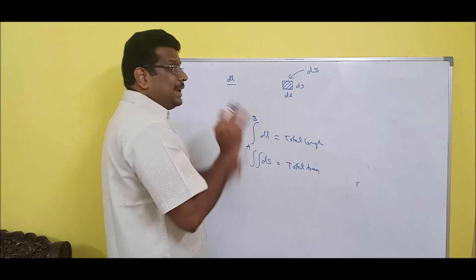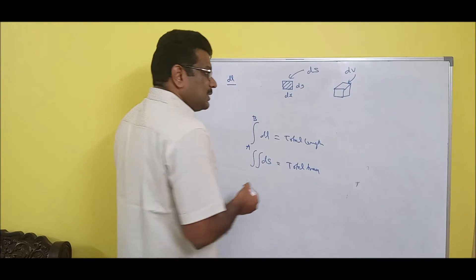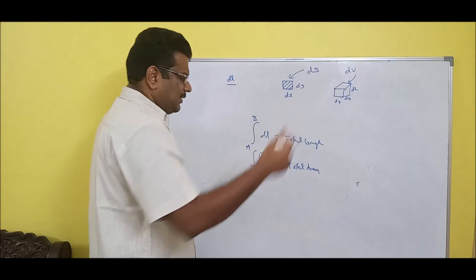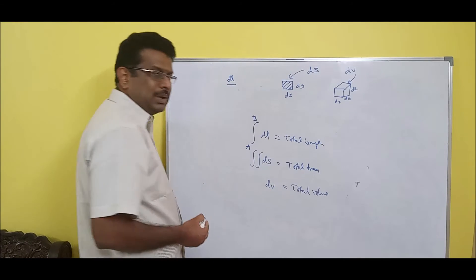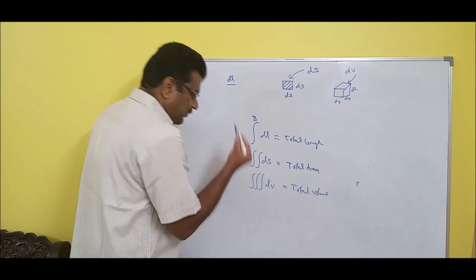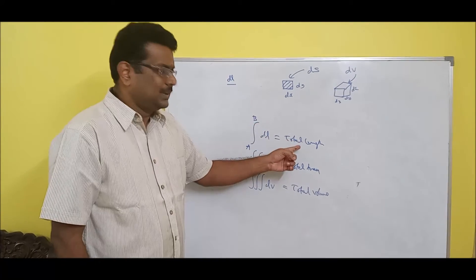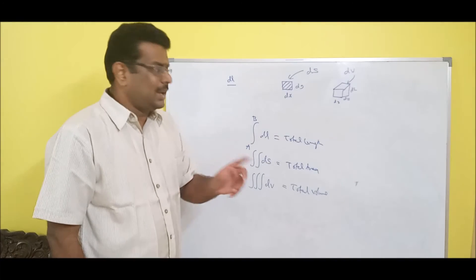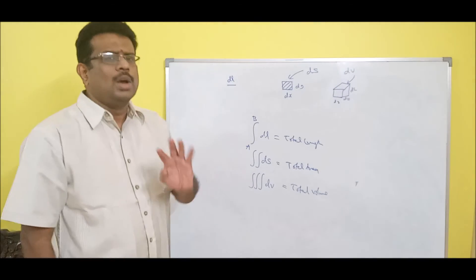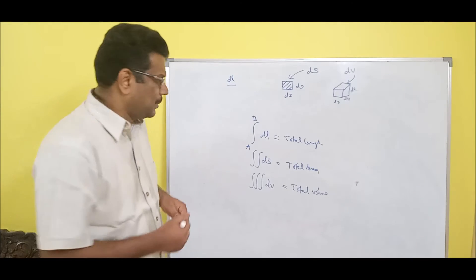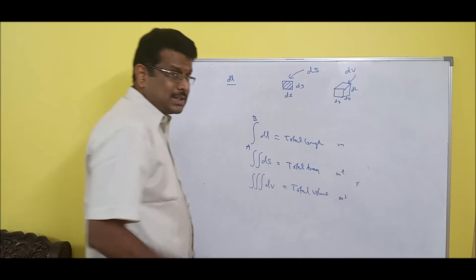If I need total volume, take elemental volume DV, which is the combination of DX, DY, DZ — one for length, one for breadth, one for height — so integrate three times. Conclusion: single integration is a line integral giving total length (result in meters). Double integration is area integration giving total area (result in meters squared). Triple integration is volume integration giving total volume (result in meters cubed). In engineering you generally do not go beyond triple integration.